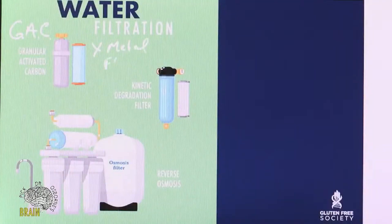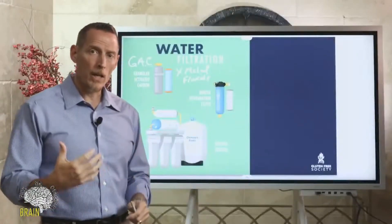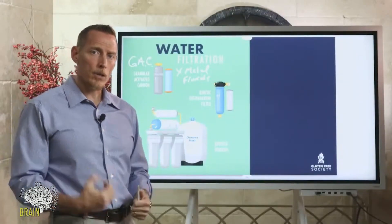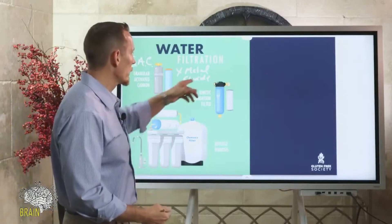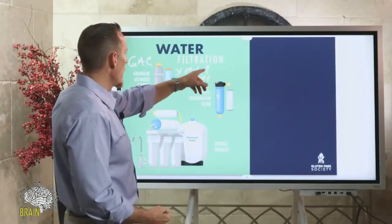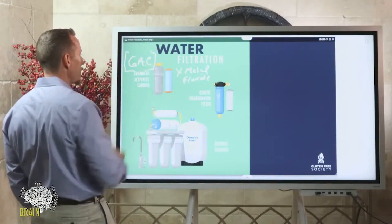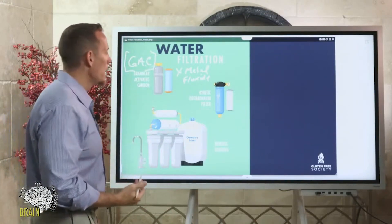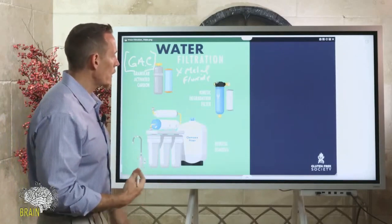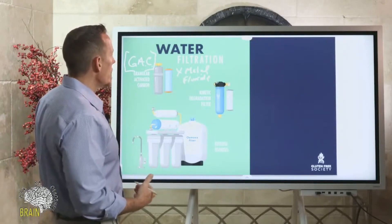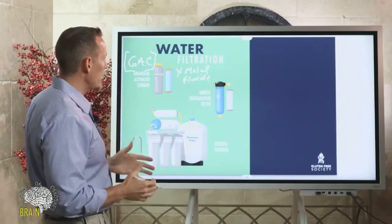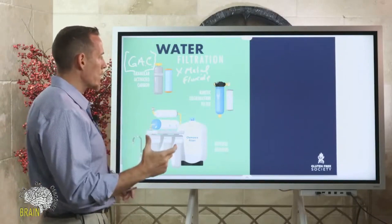GAC also won't pull fluoride. I actually had a couple of people last week come to see me — we routinely test fluoride in individuals to make sure they're not being overexposed. They were actually fluoride toxic, and they were filtering their water with GAC. Again, it doesn't pull fluoride out effectively. Not many filters pull fluoride very effectively.